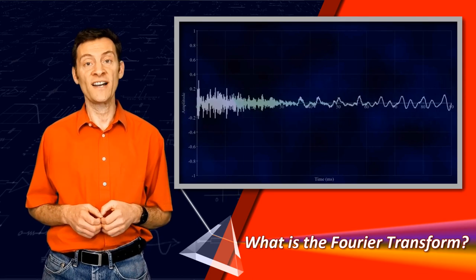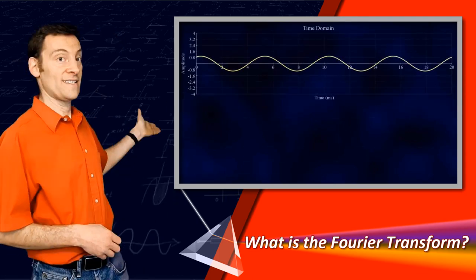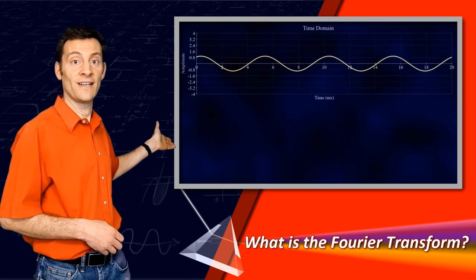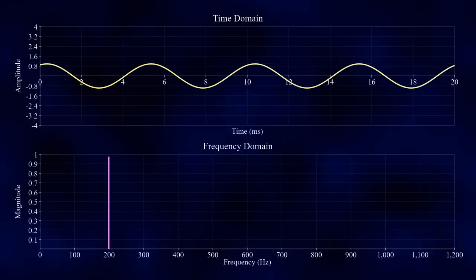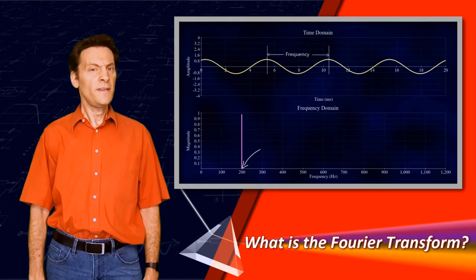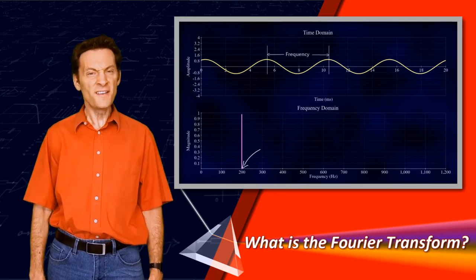Let's begin with a single sinusoid. Here it is in the time domain and here it is in the frequency domain, represented as a single line. The height of the line on the y-axis tells us its magnitude and the position of the line on the x-axis tells us its frequency. Doesn't sound much like my voice, does it?